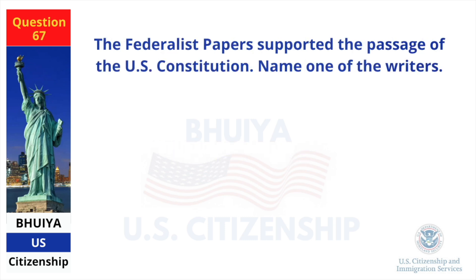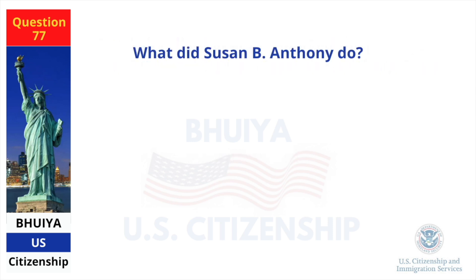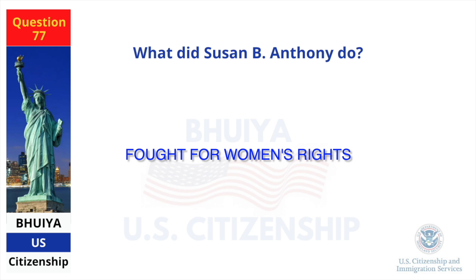The Federalist Papers supported the passage of the U.S. Constitution — name one of the writers. James Madison. What did Susan B. Anthony do? Fought for women's rights.